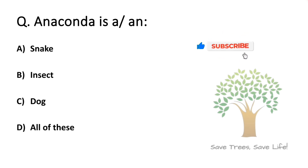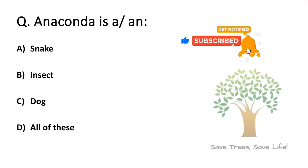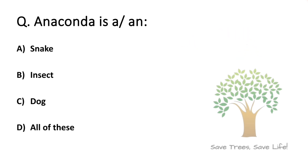Bonus question: An anaconda is a — Option A: Snake. Option B: Insect. Option C: Dog. Option D: All of these. Friends, this question is for you. Please give the answer in the comment box. Thank you.